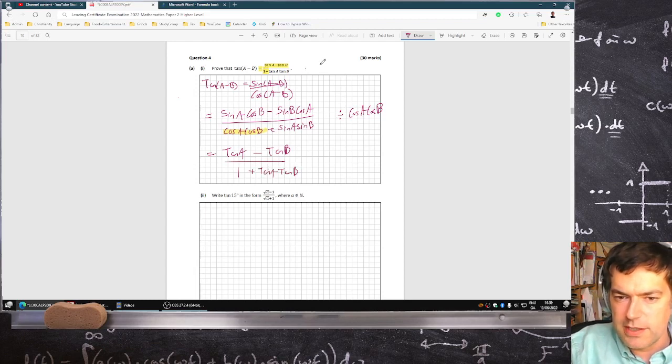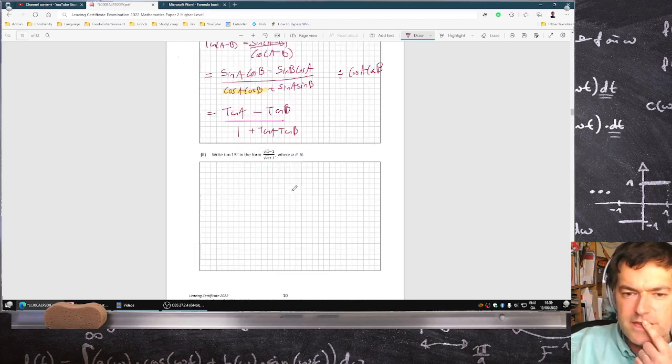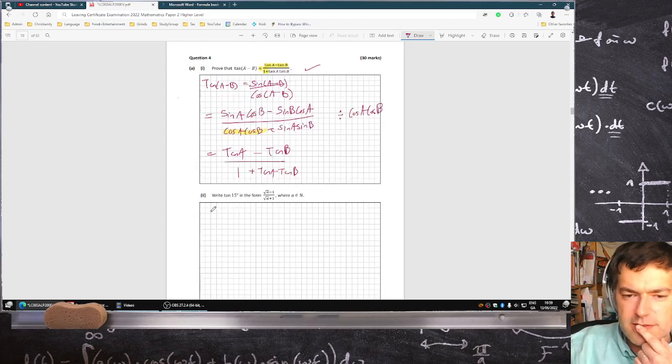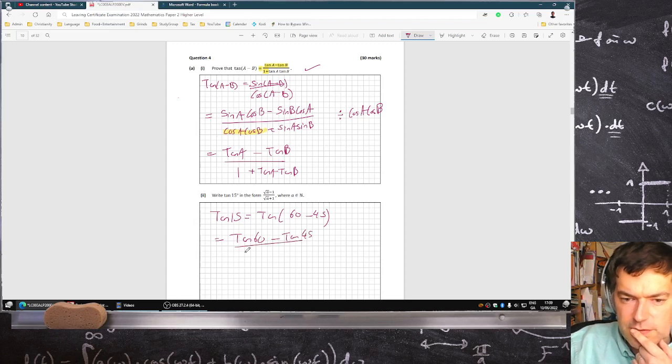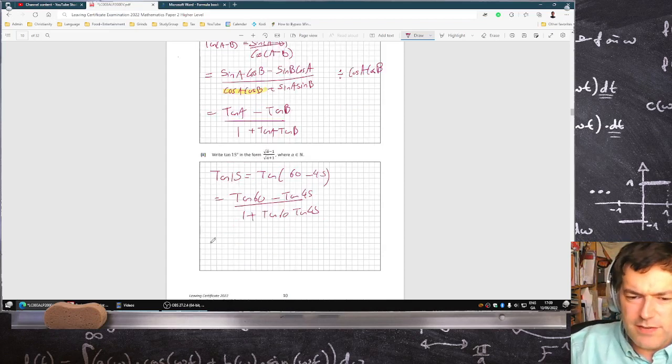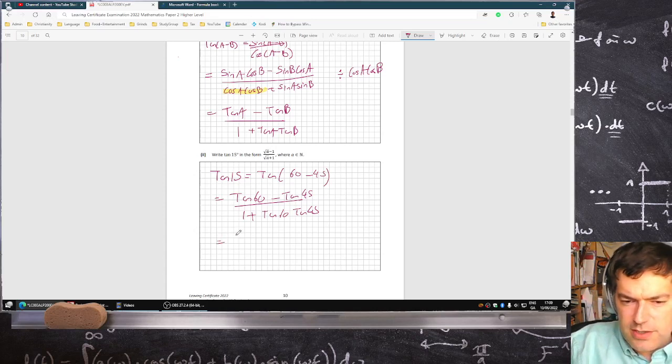And tan(15°), okay, so tan(15°) will equal tan(60° - 45°), which will be tan(60°) - tan(45°) over 1 + tan(60°)tan(45°). Tan(45°) is 1 and tan(60°) is √3, so that's √3 - 1 over 1 + √3, or in other words √3 - 1 over √3 + 1.